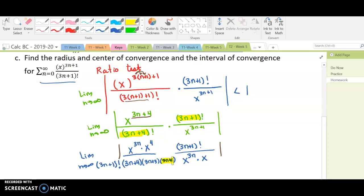So that would be 3n plus 2, 3n plus 3, and 3n plus 4. And so then the 3n plus 1 factorial cancel out exactly.